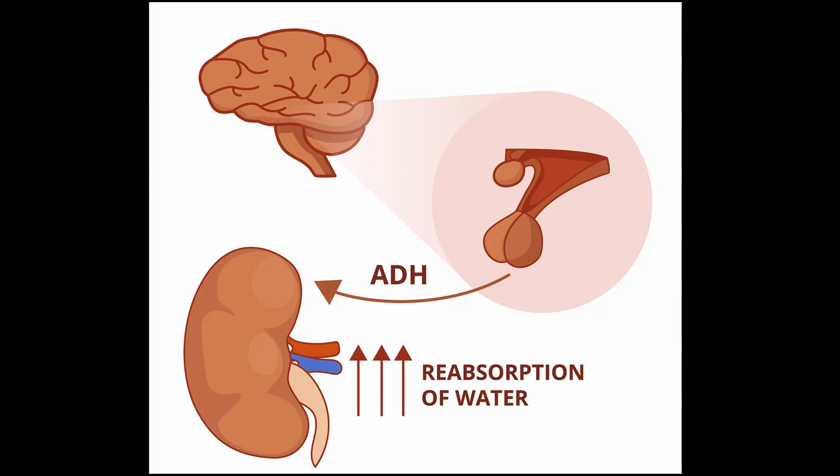Starting out with the brain — specifically the pituitary, an endocrine gland in the brain — it identifies when there are changes occurring to the viscosity of the blood. The pituitary then secretes ADH in response to changes in blood osmolality, and the ADH receptors in the renal tubules are stimulated to reduce or increase sodium excretion and therefore water excretion.